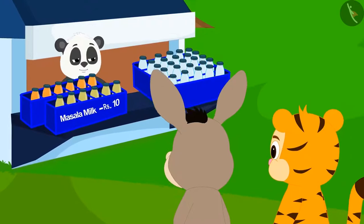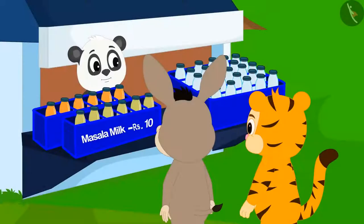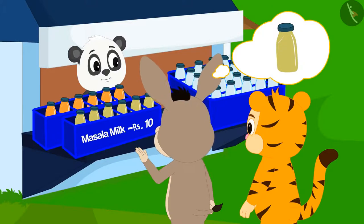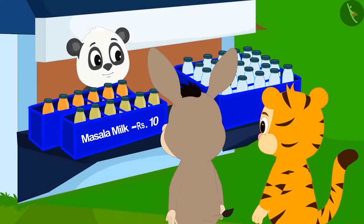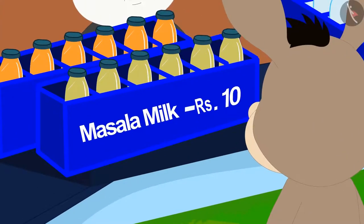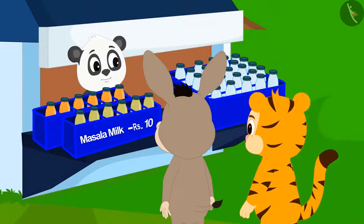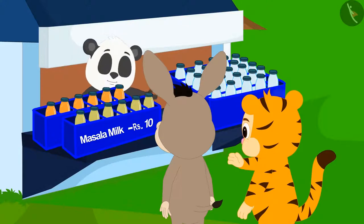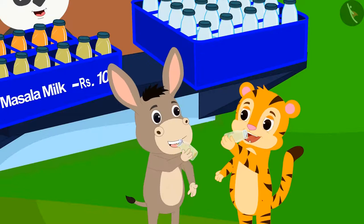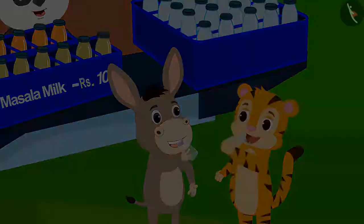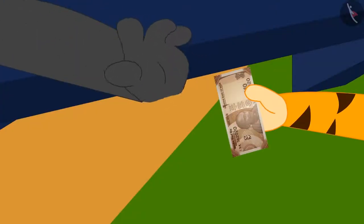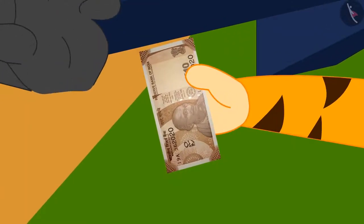Bholla and Sher Khan have come to Golu's dairy. They want to drink spice milk first. Golu has placed six bottles of spice milk on a tray. Sher Khan saw that Golu had written on that tray: Masala milk rupees 10. He got excited and immediately asked Golu for six bottles of spiced milk. Sher Khan and Bholla enjoyed their bottles of spice milk. Then Sher Khan gave 10 rupees for the spiced milk to Golu.